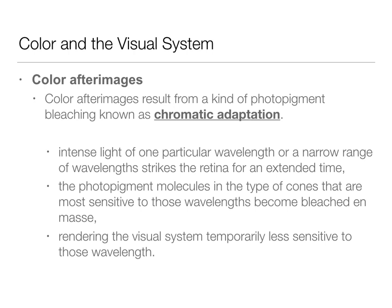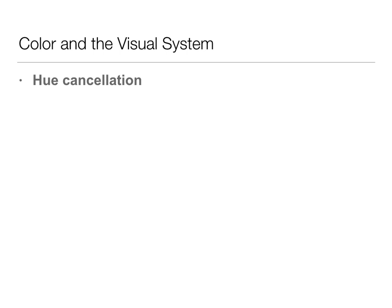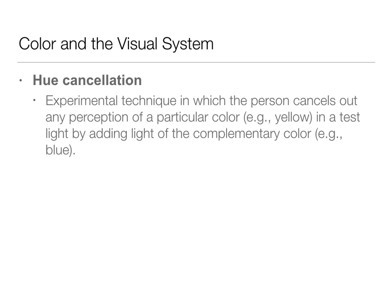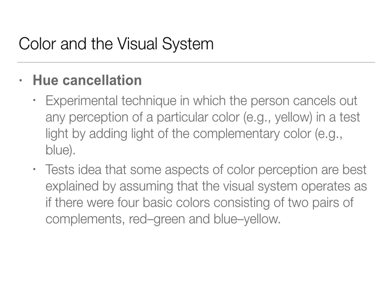Hue cancellation is another support for the opponent processing theory. This is an experimental technique where a person can cancel out a perception of a particular color. If you're looking at yellow and trying to get rid of it, you can cancel it by adding the complementary color — in this case, blue. If you have a red light and you're trying to cancel it, you would add green. This really tests the idea that some aspects of our color perception are best explained by assuming these four primaries and their opposites.